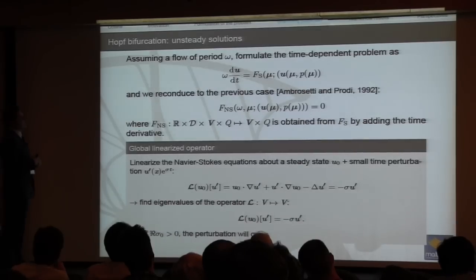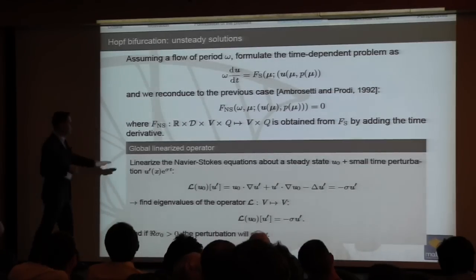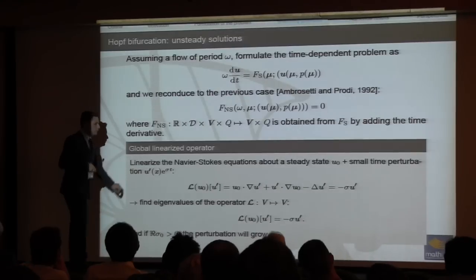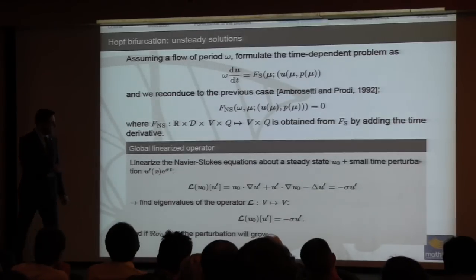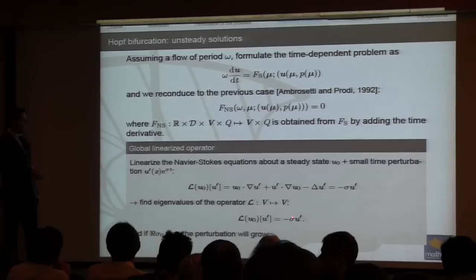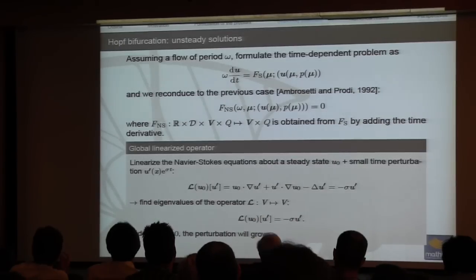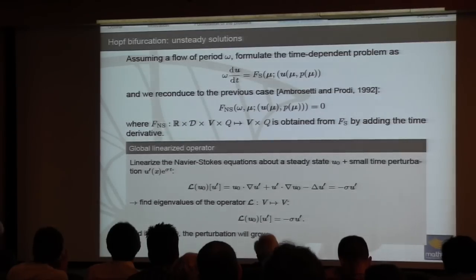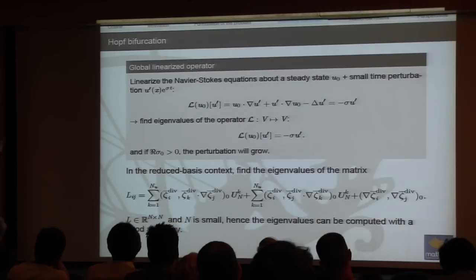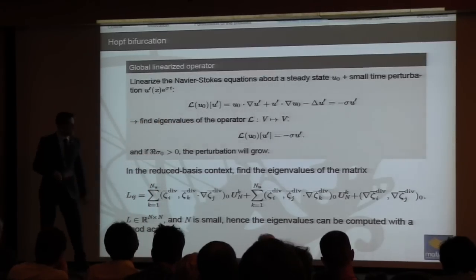In the unsteady case — Hopf bifurcation — we introduce a frequency omega for the flow, linearize the full operator, and superimpose the steady state and a perturbation. The real part of the eigenvalue sigma indicates instability: when it becomes positive, the perturbation is not damped and the system moves to a time-periodic state. An equivalent eigenvalue problem is formulated in the reduced basis space to capture this information.